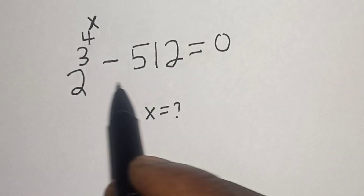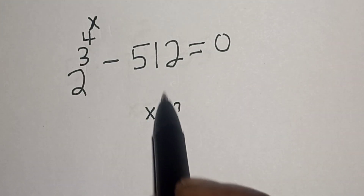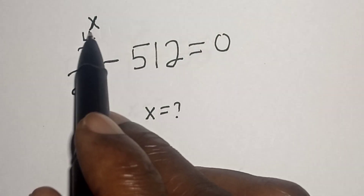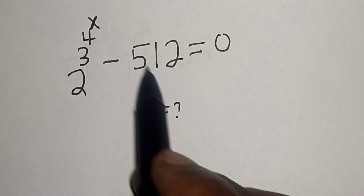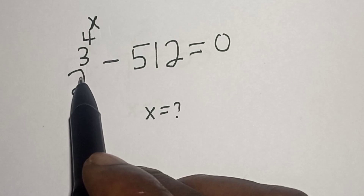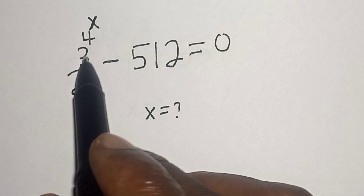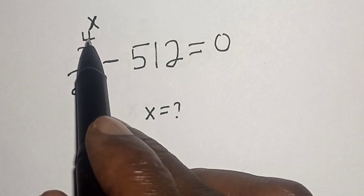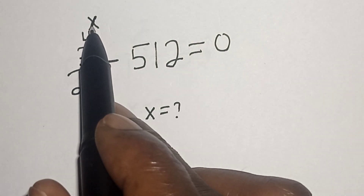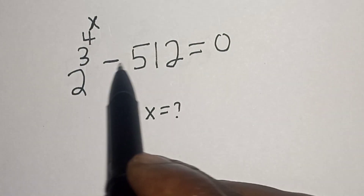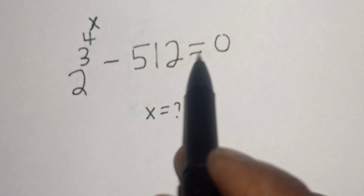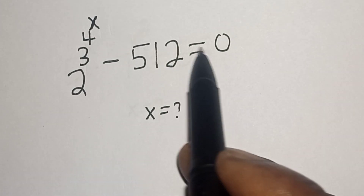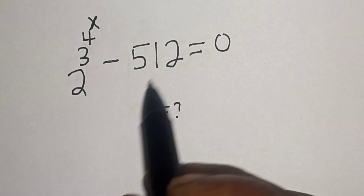Hello, welcome to Magis. In this class we want to find the value of x from this equation: 2 to the power of 3 to the power of 4 to the power of x, minus 512, is equal to 0.